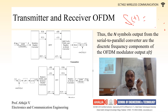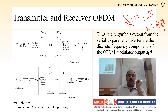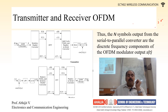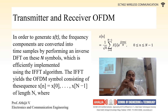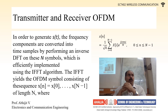So s(t) is equal to sigma Xi e^(j2π fi t). In order to generate s(t), the frequency components are converted into time samples by performing inverse DFT on the symbols, which is efficiently implemented using the IFFT algorithm.